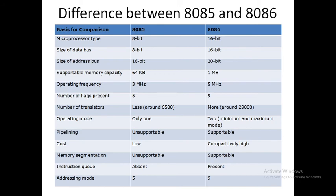Operating frequency: in 8085 is 3 MHz, in 8086 it is 5 MHz. Number of flags present in 8085 is 5 whereas the number of flags in 8086 is 9.